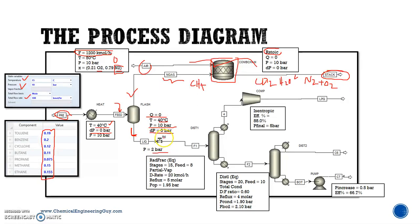The first column will be modeled with a RadFrac in equilibrium conditions. It has 15 stages, feed at the 8th stage, partial vapor, distillate rate of 20 kmol/h, and reflux of 5 molar. The operating pressure is 1.95 bar with no pressure drop - of course in real life that doesn't happen, but we'll assume this.